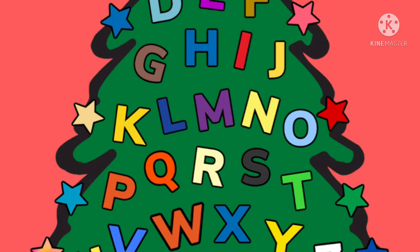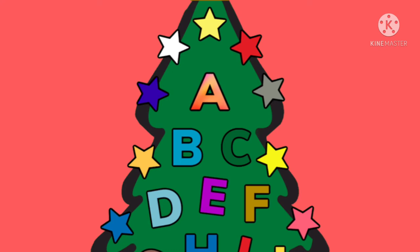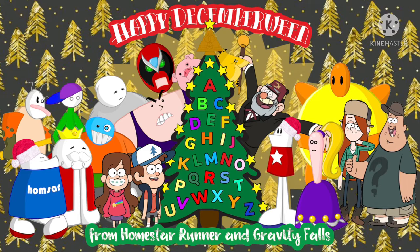Let's put it all together. Z, Y, X, W, V, U, T, S, R, Q, then P, O, N, M, L, K, J, I, H, G, then comes F, then E, then D. Three more to go. Then C, then B, then A.